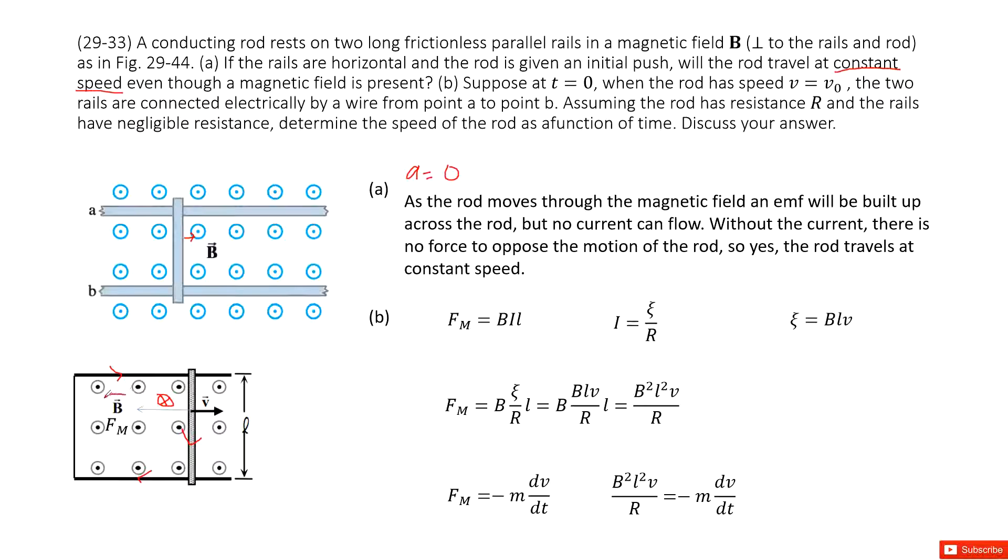So this is the direction for the magnetic force. This magnetic force will produce acceleration to make the velocity decrease.